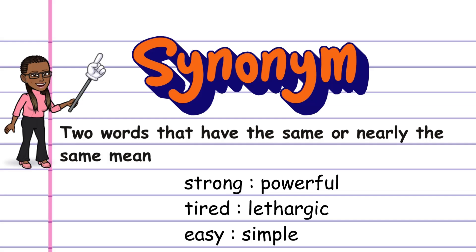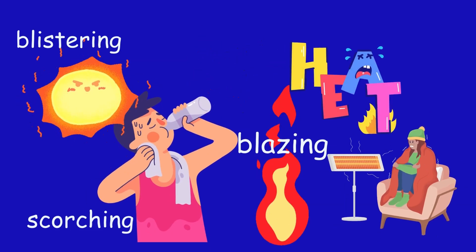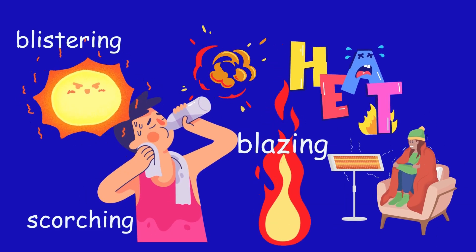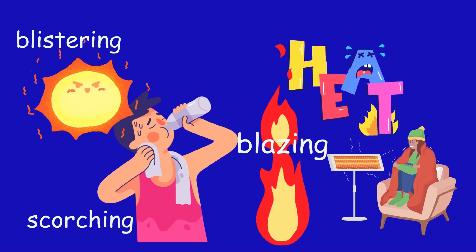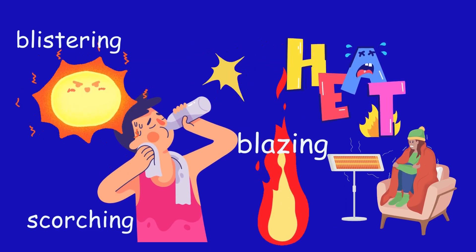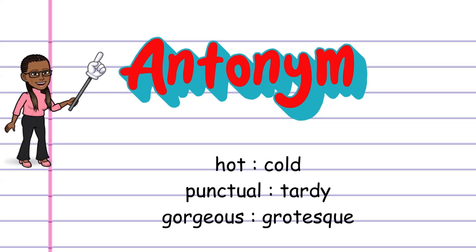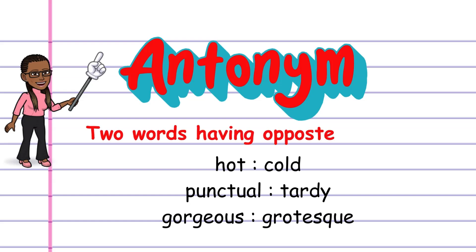A synonym refers to two words having the same or nearly the same meaning. For example, strong and powerful, tired and lethargic, easy and simple.